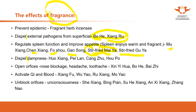Fragrant herbs can also unblock orifices — for symptoms such as nose blockage, head blockage, headache, and toothache, we use Xin Yi Hua, Bo He, and Bai Zhi. For activating qi and blood: Xiang Fu, Wu Yao, Xiang Ru, and Mo Yao. For unblocking orifices in cases of unconsciousness: She Xiang, Bing Pian, Su He Xiang, An Xi Xiang, and Zhang Nao.